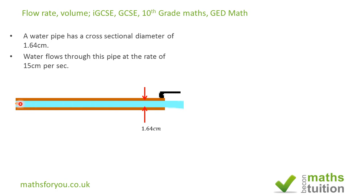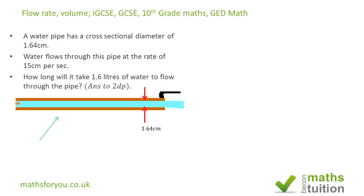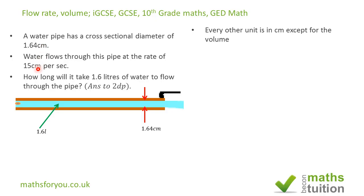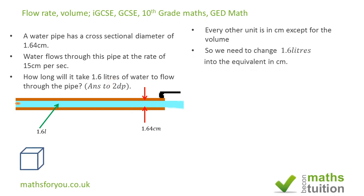We are looking for volume. The pipe itself contains a volume of 1.6 liters. Now note that the units for the diameter are in centimeters and the travel rate is also in centimeters, but the volume is given in liters — so we need to convert the volume to an equivalent in centimeters cubed.